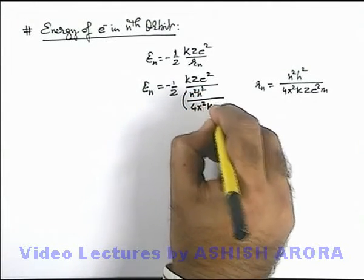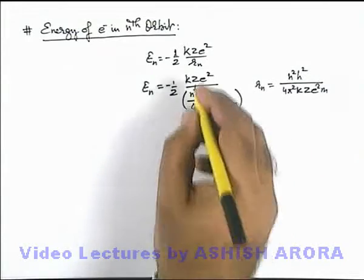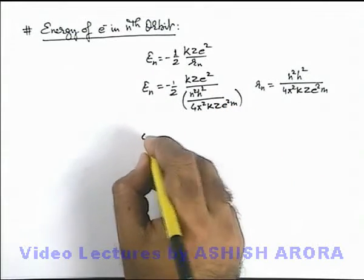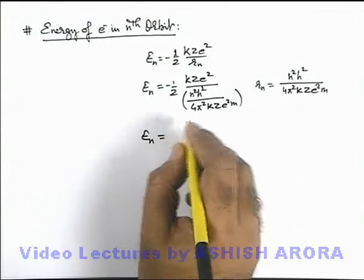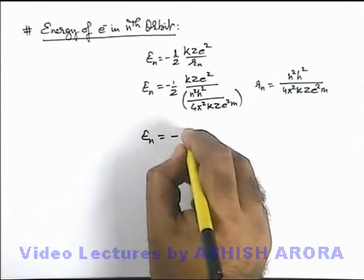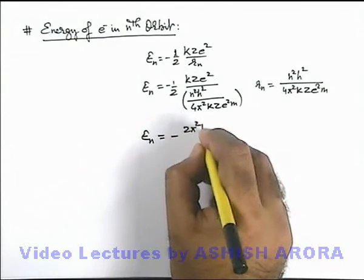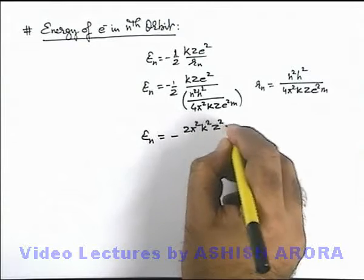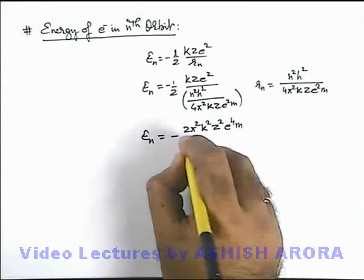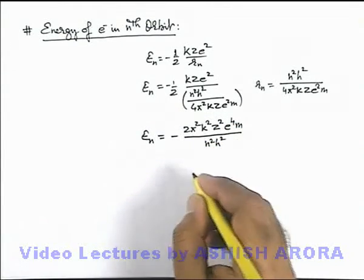And on further simplifying you can see the value of r_n, the value of E_n we are getting here is minus 2 pi square k square z square e^4 m by n square h square.